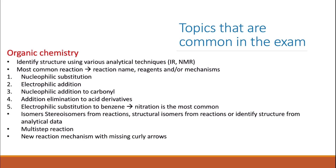Usually there is a question with a new reaction mechanism you've never seen before — we can never predict exactly what it will be, as organic chemistry has so many mechanisms. But always expect a new reaction mechanism. Usually what they ask is quite simple: there are missing curly arrows, and they ask you to complete the mechanism by drawing the missing arrows. Just follow the movement of electrons.